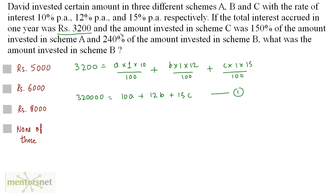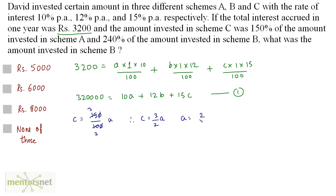It has been given that the amount invested in C was 150% of the amount invested in scheme A. So C equals 150% of A. So C equals 3/2 A. In other words, A equals 2/3 C.